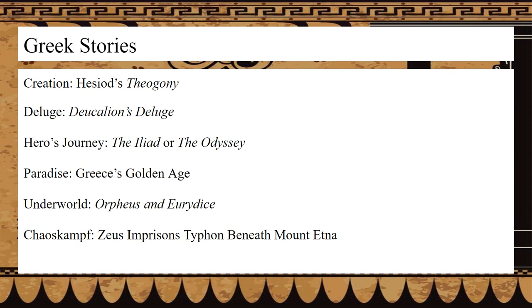From Gaia was born Uranos, heaven, to be her consort, as well as Pontus, the primordial ocean, setting the stage for all of Greek mythology.